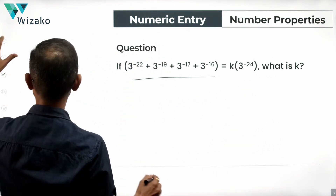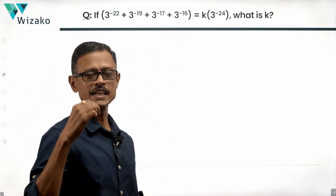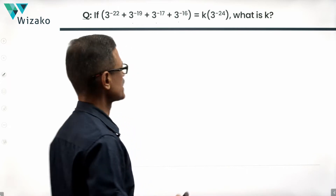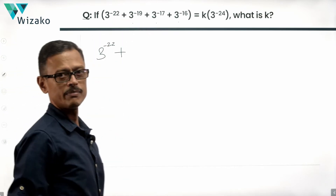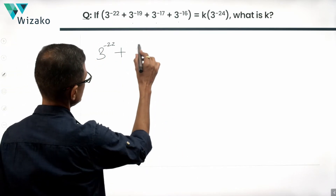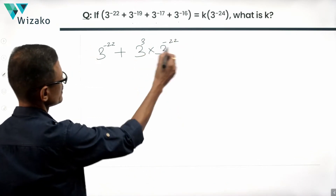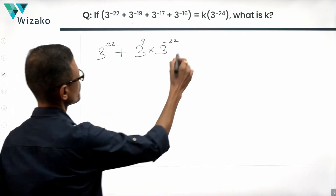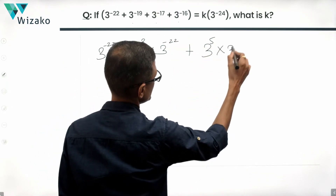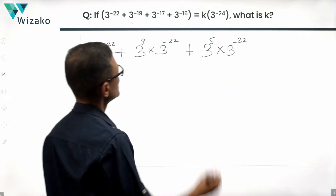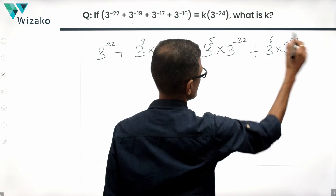Let's start with the left hand side of this equation. I'm going to write each of these terms in terms of 3 raised to the power of minus 22. So we have 3 raised to the power of minus 22, plus 3 raised to the power of minus 19, which is 3 cubed into 3 raised to the power of minus 22. For 3 power minus 17, it's 3 raised to the power of 5 into 3 raised to the power of minus 22. The last term can be written as 3 raised to the power of 6 into 3 raised to the power of minus 22.